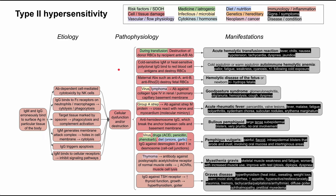This is a mechanism of disease map for type 2 hypersensitivity, or the cytotoxic inflammatory reaction. I'll be talking about the etiology of type 2 hypersensitivity, the pathophysiology, and the manifestations. As in all of these flowcharts, each of these bubbles are color-coded according to this legend up here.